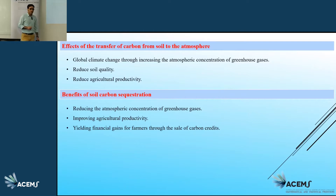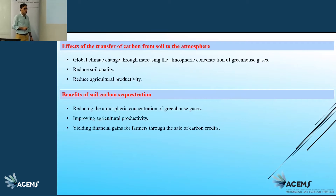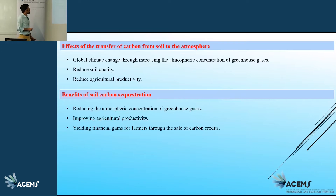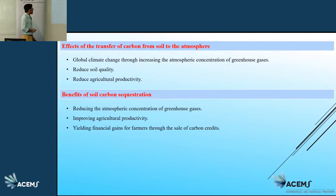On the other hand, soil has a high capacity to absorb a large amount of carbon, and this storage of carbon into the soil is known as soil carbon sequestration. The benefits of soil carbon sequestration are reducing the atmospheric concentration of greenhouse gases, improving agricultural productivity, and yielding financial gains for farmers through the sale of carbon credits.